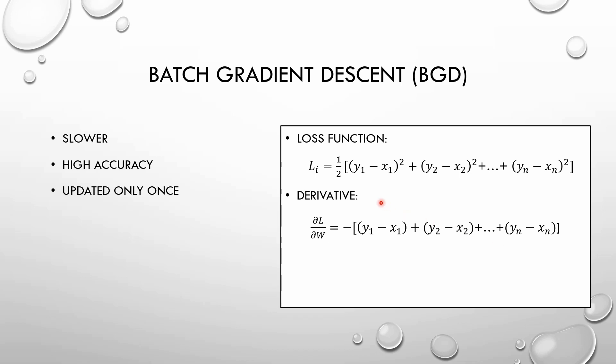The next thing we are going to see is the batch gradient descent. We need to calculate the gradients on the whole dataset to perform just one update. Batch descent can be very slow and is intractable for datasets that don't fit in memory. It turns out to be slower but it has a high accuracy. You only need to update it once and the cost function is more complex than the stochastic gradient — you need to sum all the differences between the target and the real output. And the derivative is the same.